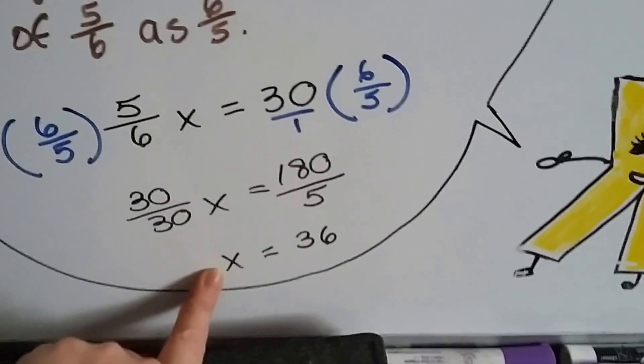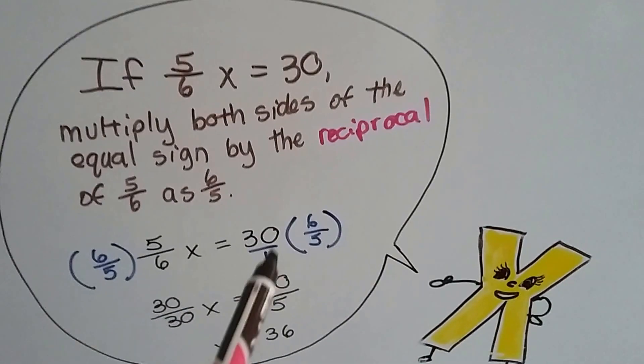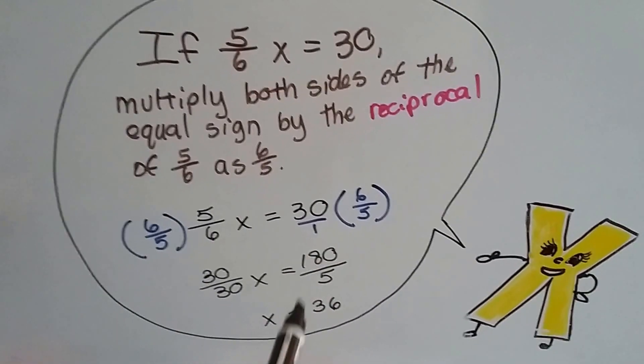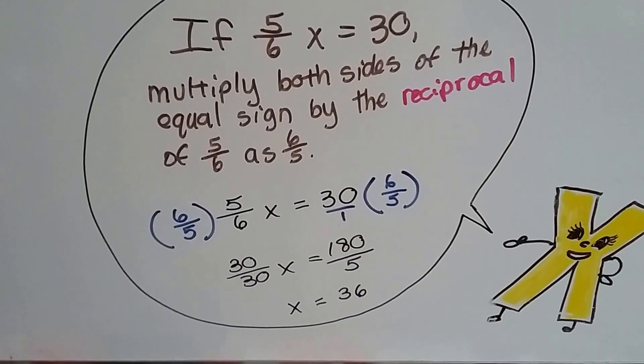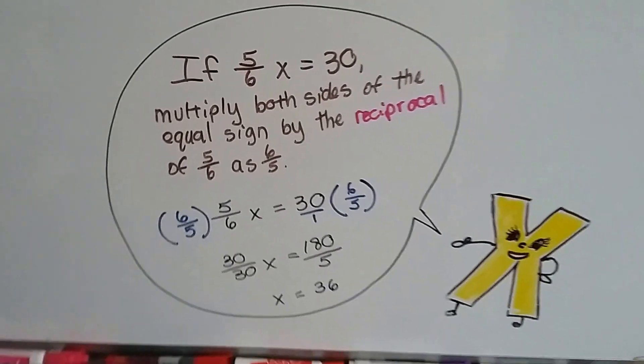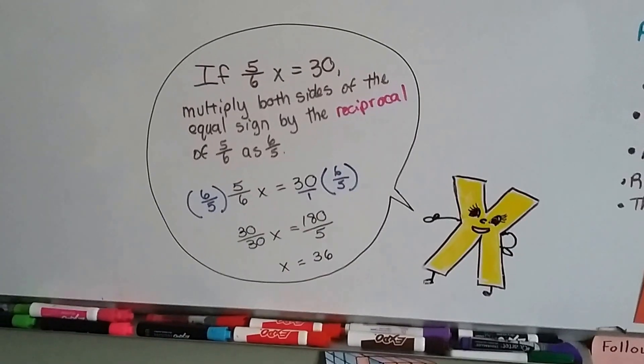And on this side, we get one-eighty over five, and five goes into one-eighty thirty-six times, so we know X is thirty-six. Just using the reciprocal.